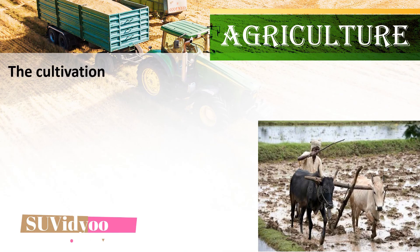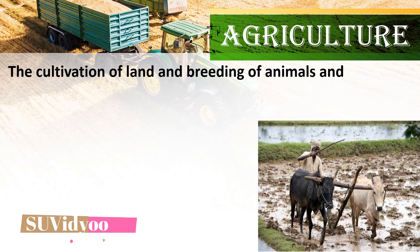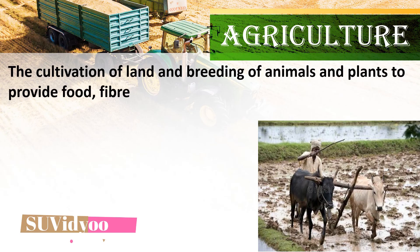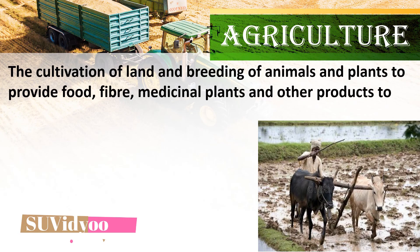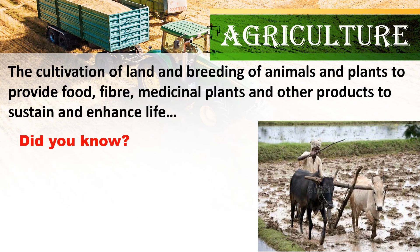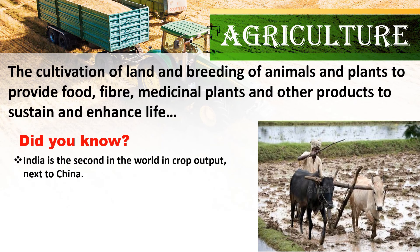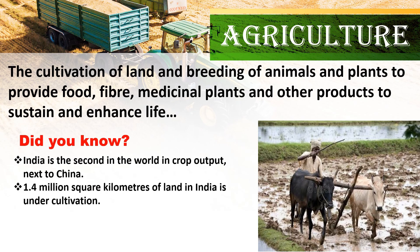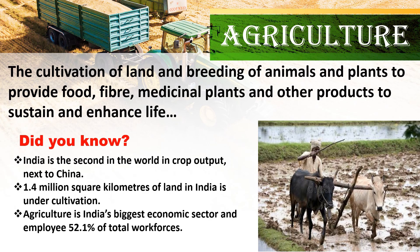The cultivation of land and breeding of animals and plants to provide food, fiber, medicinal plants and other products to sustain and enhance life is known as agriculture. India is second in the world in crop output, next to China. 1.4 million square kilometers of land in India is under cultivation. Agriculture is India's biggest economic sector and employs 52.1% of the total workforce.